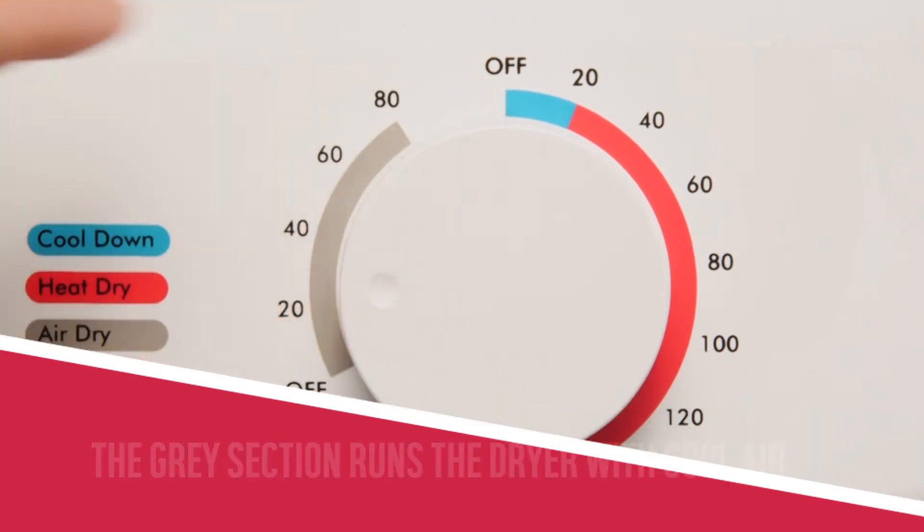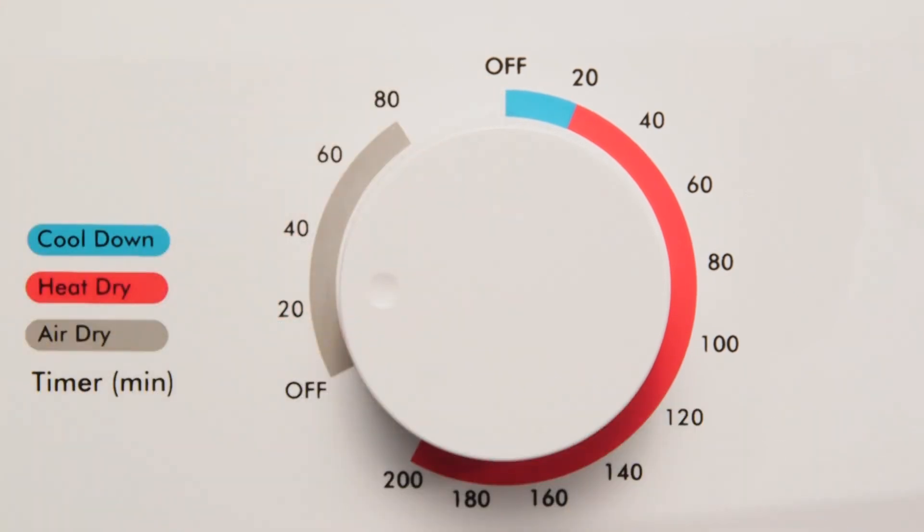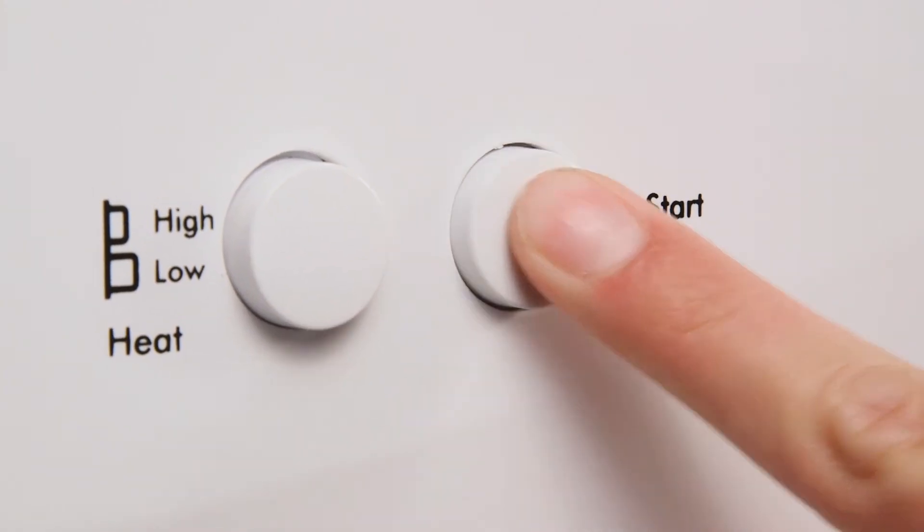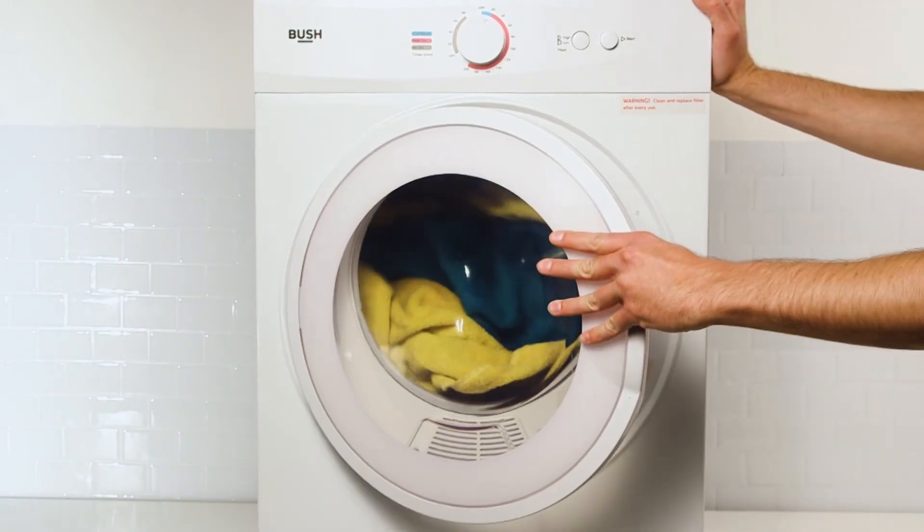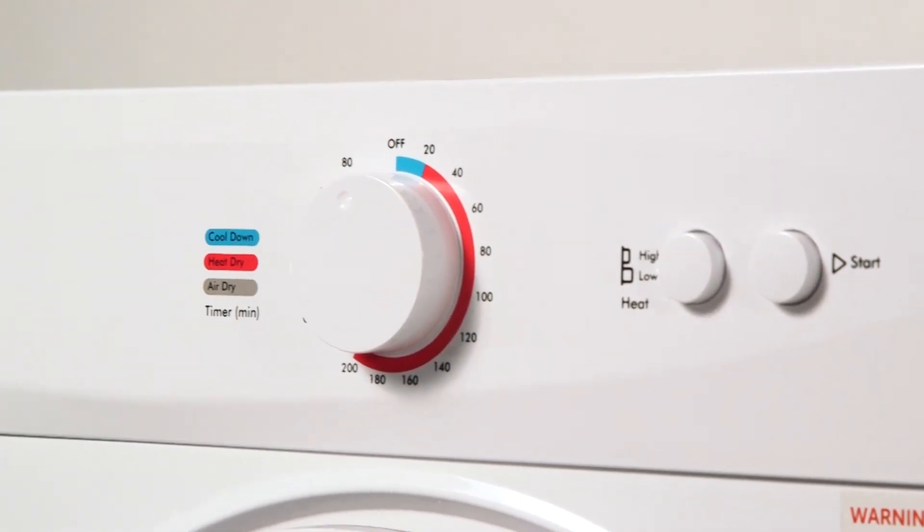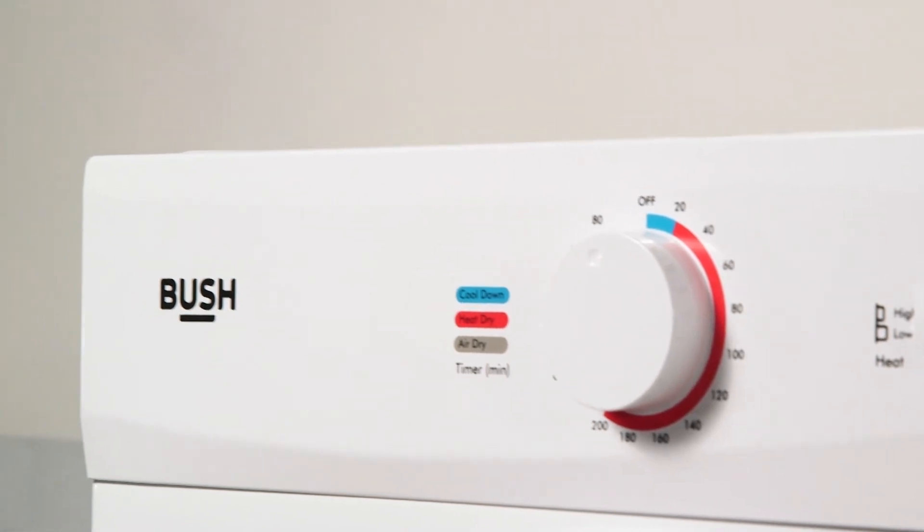This is used to freshen clothing that have been stored for a long time. Select the start button to begin the drying cycle. If the door is opened during the cycle, the dryer will automatically stop. Your Bush tumble dryer is now ready to use.